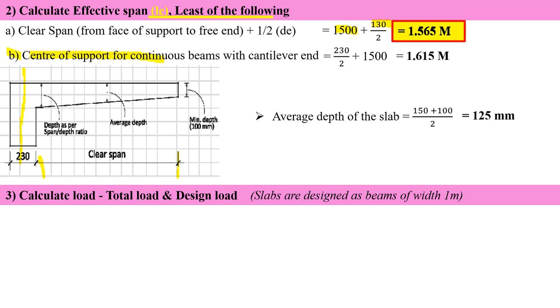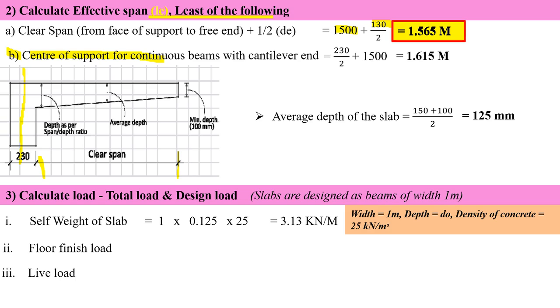Calculation of the load: we have three types of load in this particular balcony slab. The self weight of the slab is overall depth multiplied by width and density of concrete. Density of concrete is 25.